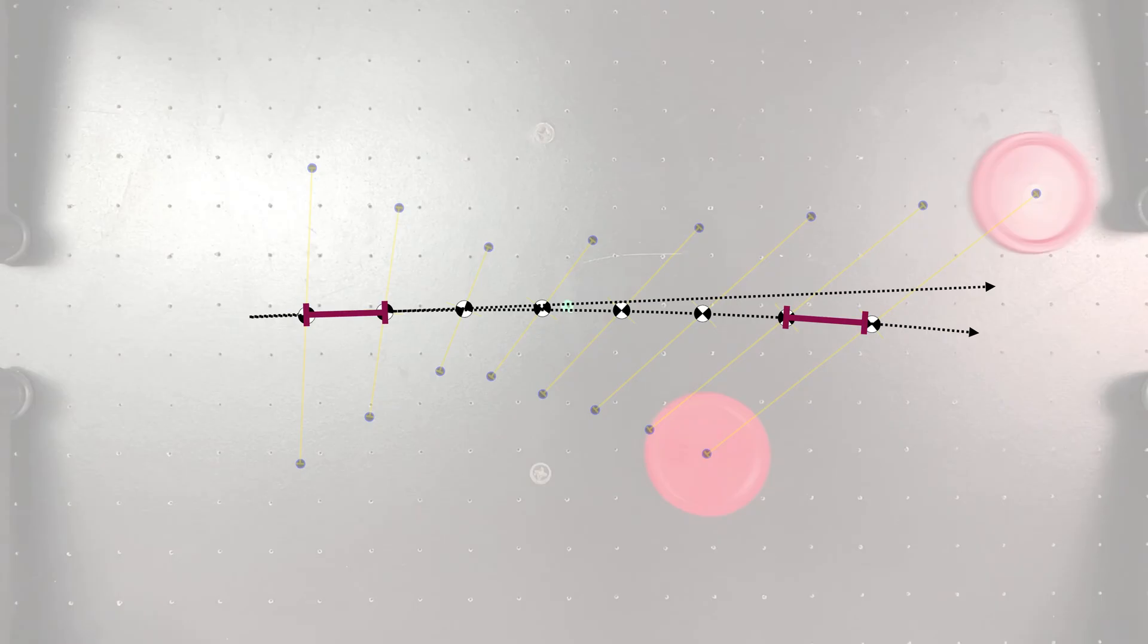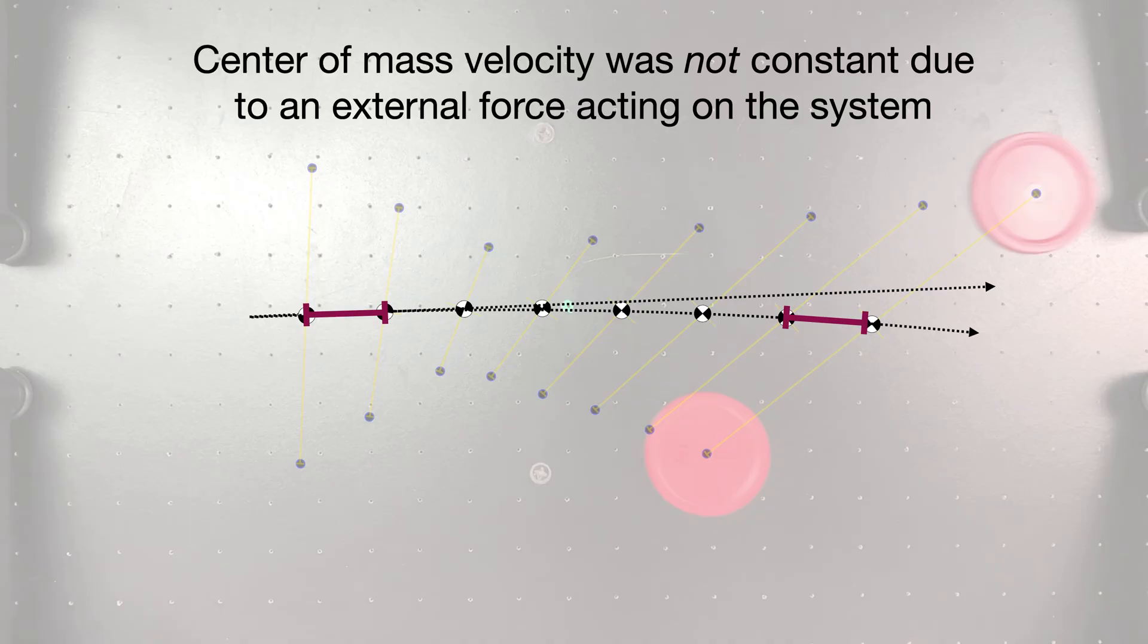Anyways, the point we're trying to make here is that the center of mass velocity was not constant due to an external force acting on the system.